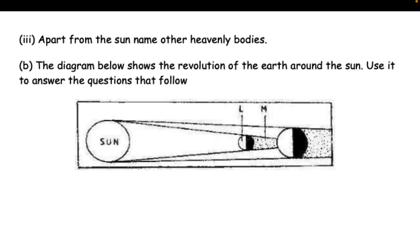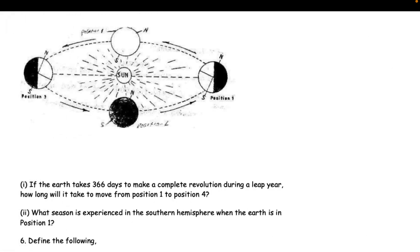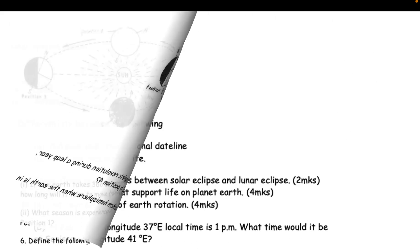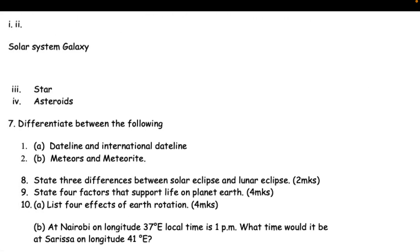(b) The diagram below shows the revolution of the earth around the sun. Use it to answer the questions that follow: (i) If the earth takes 366 days to make a complete revolution during a leap year, how long will it take to move from position one to position four? (ii) What season is experienced in the southern hemisphere when the earth is in position one?